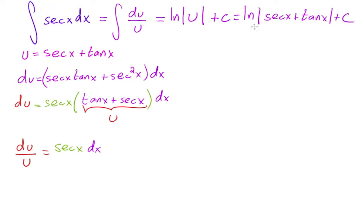Clever, right? We did a substitution so that when you find du, you get exactly what you're looking for — secant x dx — equal to du over u with that specific substitution. So now you know that if I give you the integral of secant x dx, you can just write ln|secant x + tangent x|. That's a good one to remember.